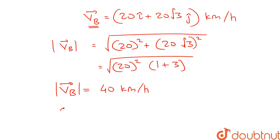And the direction denoted as theta will be equal to tan inverse of vertical component divided by the horizontal component. So vertical component is 20 root 3 and horizontal component is 20. So 20 and 20 get cancelled, we have tan inverse root 3 and the value of theta comes out to be 60 degrees.